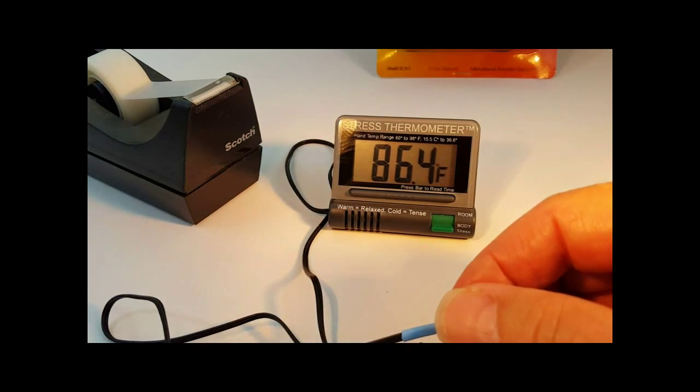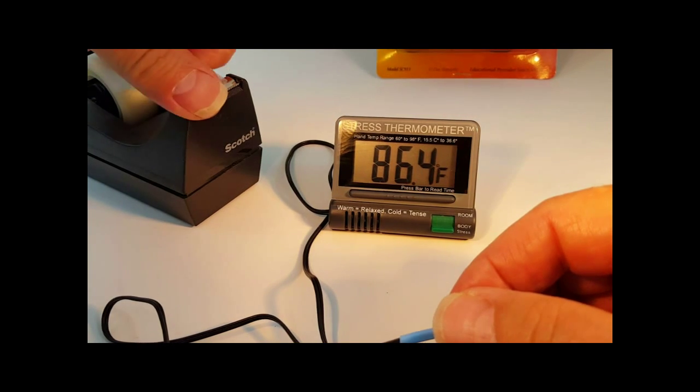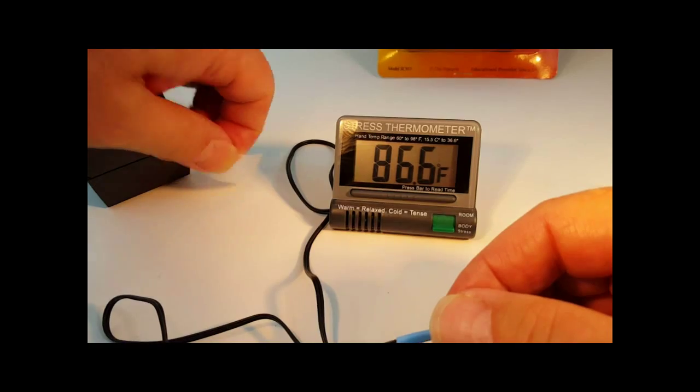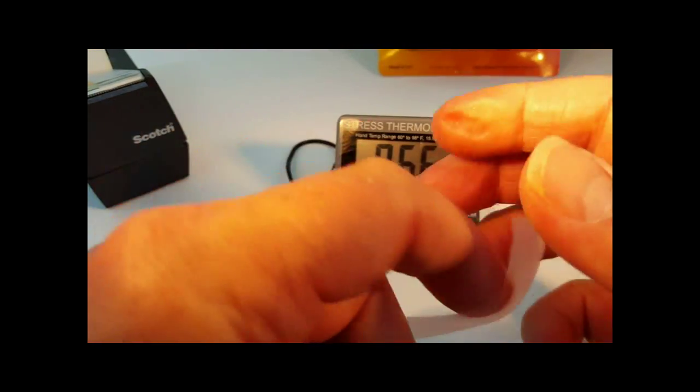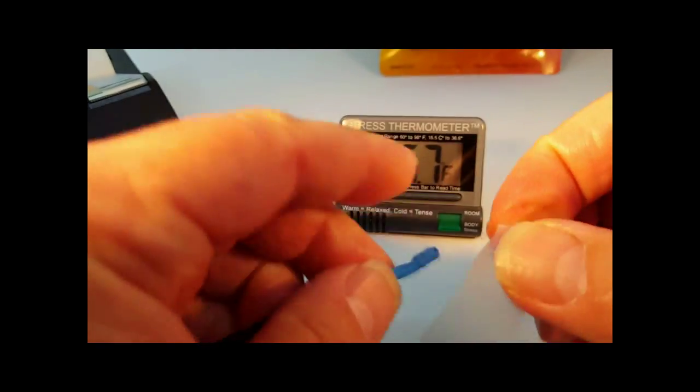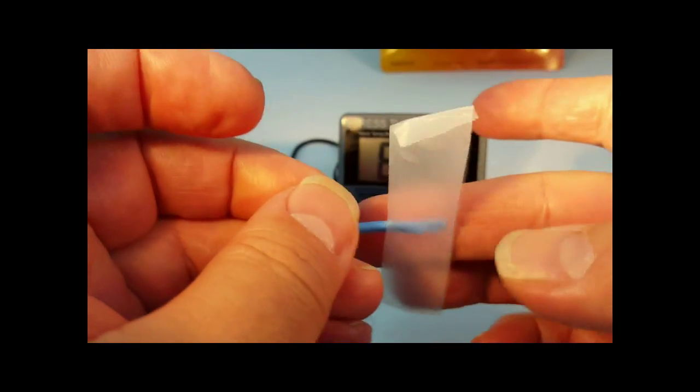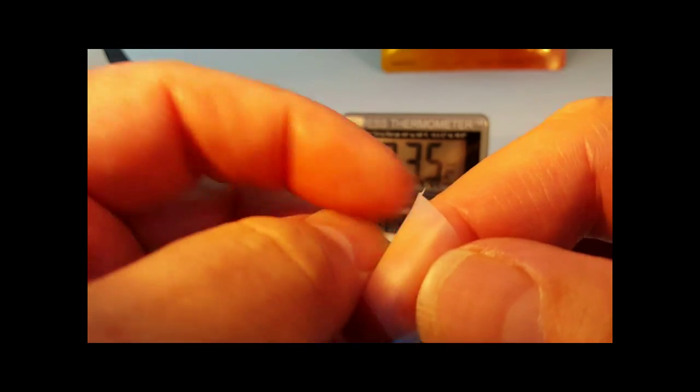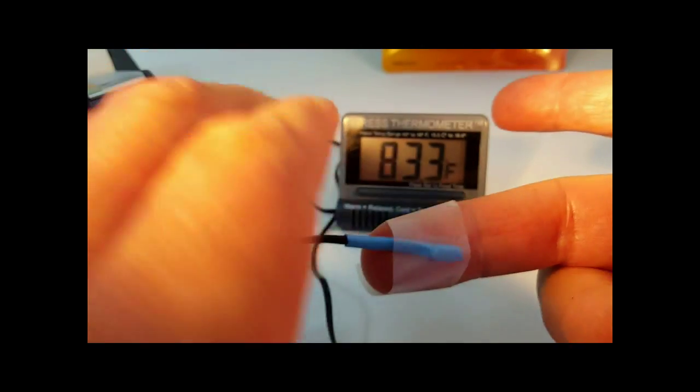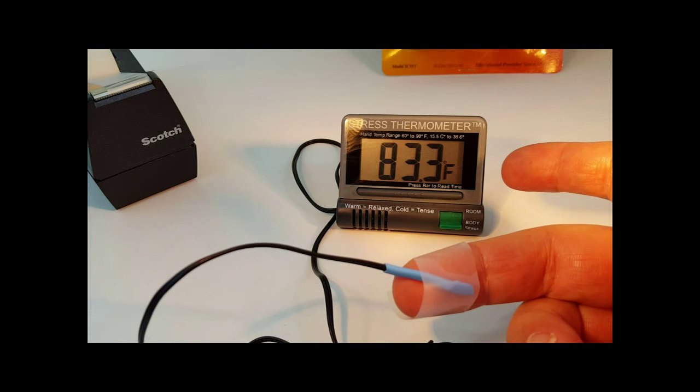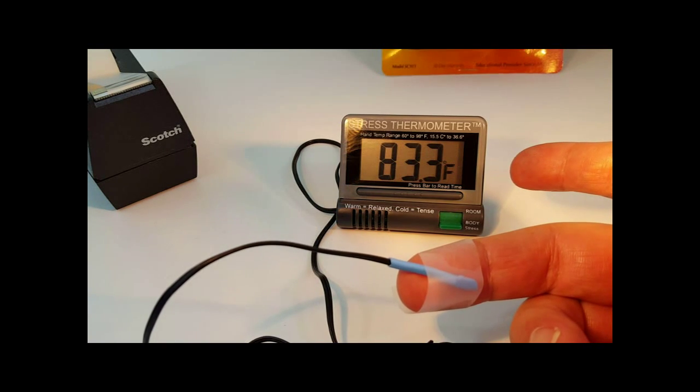What I'll do is I'll pull off a strip of tape, make a little tab on one end so it'll be easy to pull off when I'm done, and just place it over your fingerprint, right hand or left hand, just so that it holds comfortably on your finger.